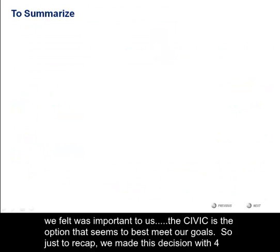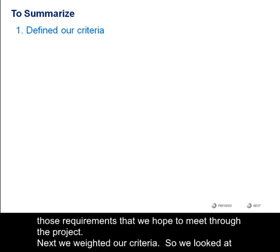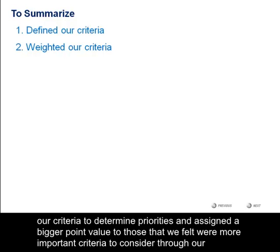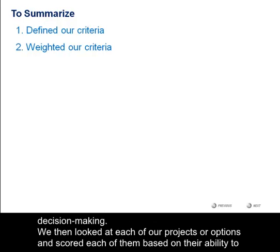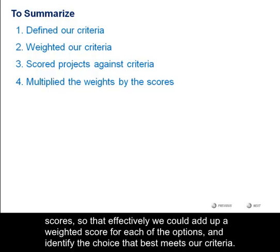So let's recap. We made this decision in four simple steps. First, we decided on the criteria — what criteria are important to us for our decision? What are those goals, those needs, those requirements that we hope to meet through the project? Next, we weighted our criteria — we looked at our criteria to determine priorities, and we assigned a bigger point value to those that we felt were more important to consider through our decision-making. We then looked at each of our options and scored each of them based on their ability to meet these criteria, setting up a very simple scale to help us do this. And then finally, we multiplied the weights by the scores so that we could add up a weighted score for each of the options and identify the choice that best meets our criteria.